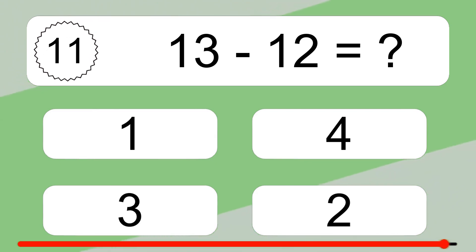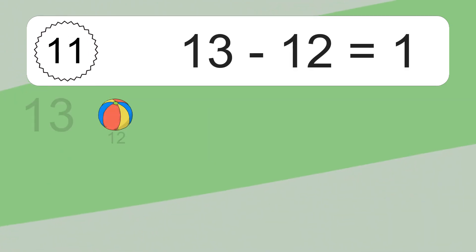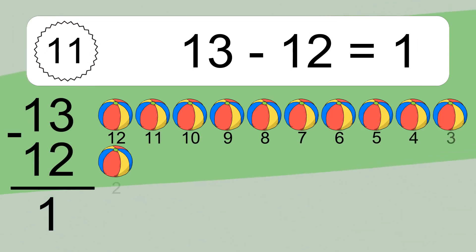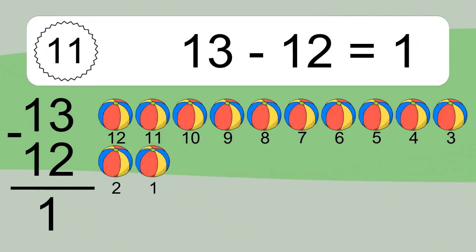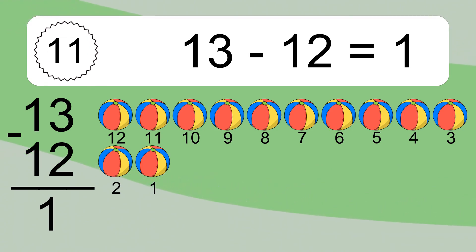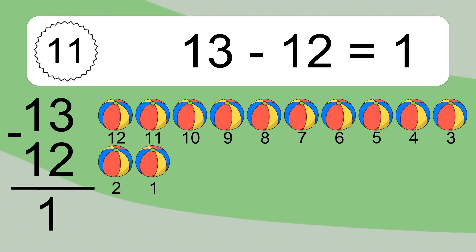13 minus 12 equals what? 13 minus 12 equals 1. Let's count it. 12, 11, 10, 9, 8, 7, 6, 5, 4, 3, 2, 1.